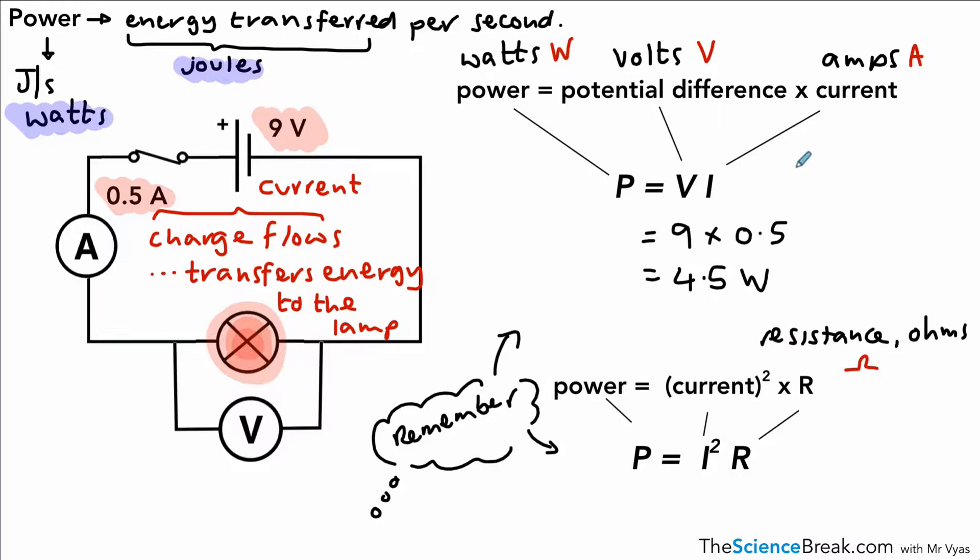Now we can't use the second equation directly because we don't have a value for resistance. But if we were being clever about it, then we would remember another equation that we do need to know. And that is R equals V over I. So resistance is potential difference over current. And we know the potential difference is 9. And we know the current is 0.5. So that gives us a resistance value of 18 ohms.